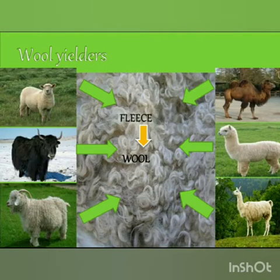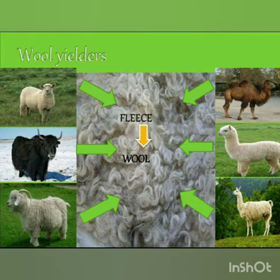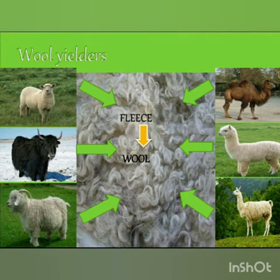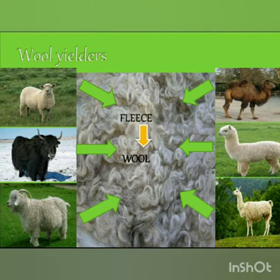Wool is obtained from the hair of sheep, called fleece. The space between their hair traps air, keeps their body warm by preventing heat loss, and thus shields their body from cold.